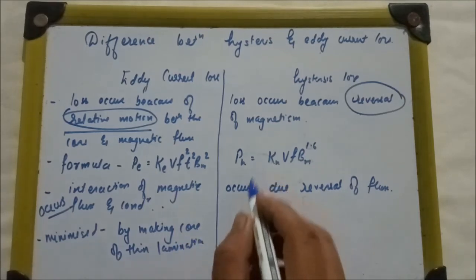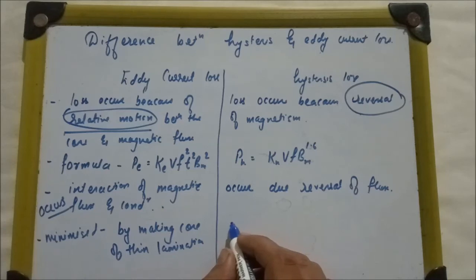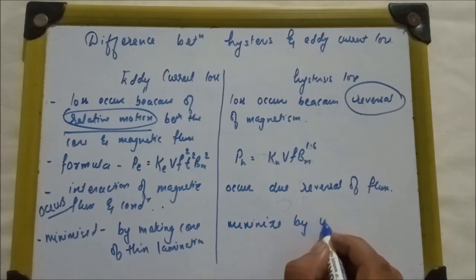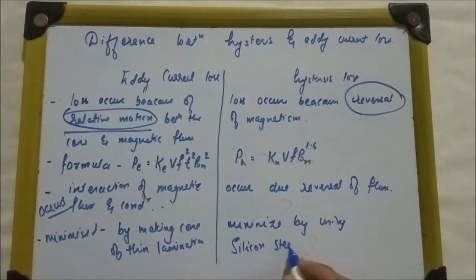And this hysteresis loss can be minimized by using silicon steel material. So, these are the important differences between eddy current loss and hysteresis loss.